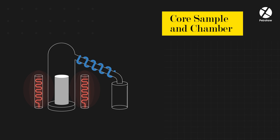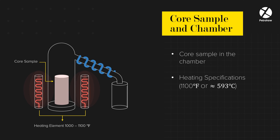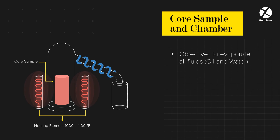In this method, a core sample is placed in a chamber and heated to a temperature of around 1100 degrees Fahrenheit, or approximately 593 degrees Celsius. The objective is to evaporate all the fluids present in the system, including oil and water.